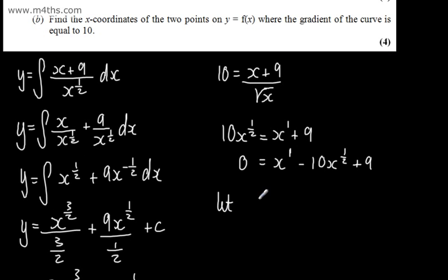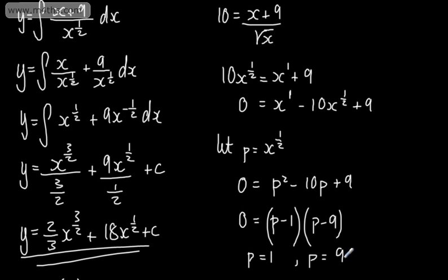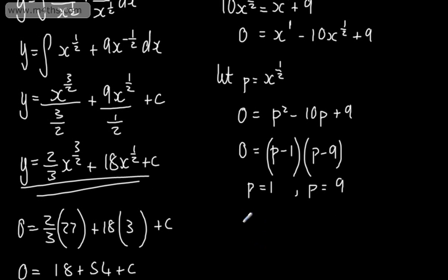Alternatively, we can let p equal x to the power of 1 half. This gives 0 equals p squared minus 10p plus 9. This factors as p minus 1 multiplied by p minus 9, giving p equals 1 or p equals 9. So x to the 1 half equals 1, squaring both sides gives x equals 1. And x to the 1 half equals 9, squaring both sides gives x equals 81.